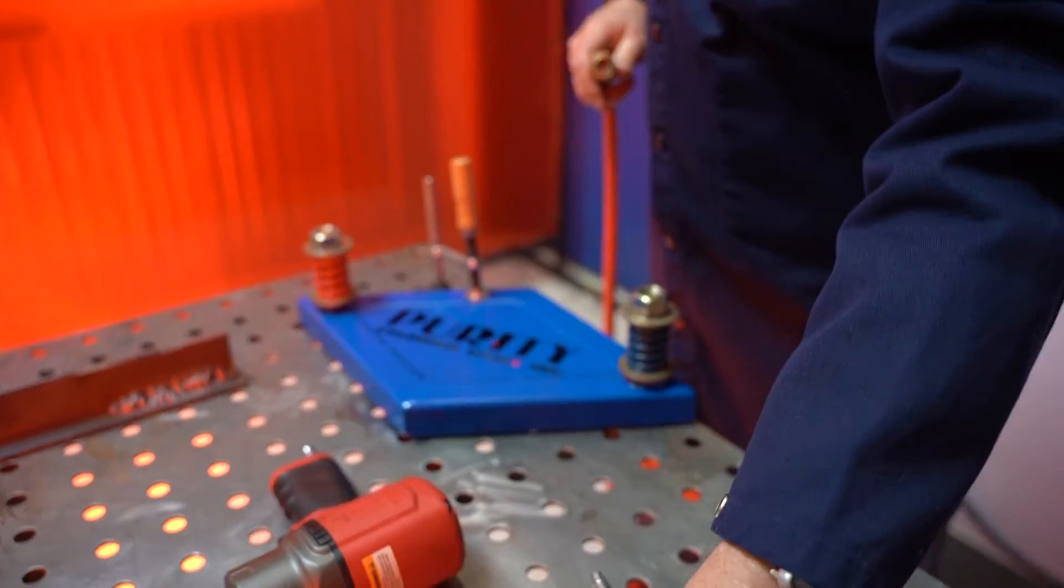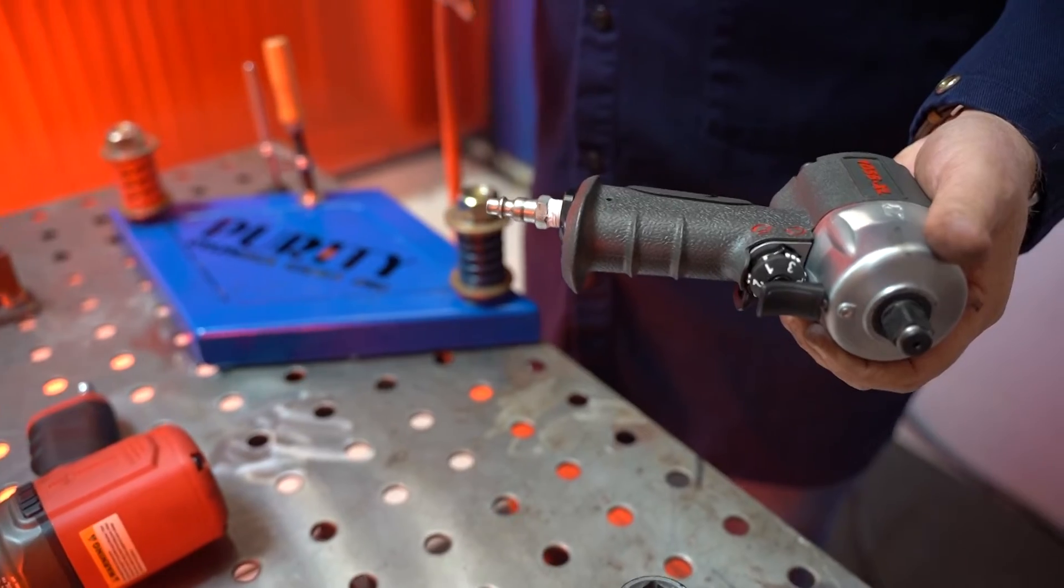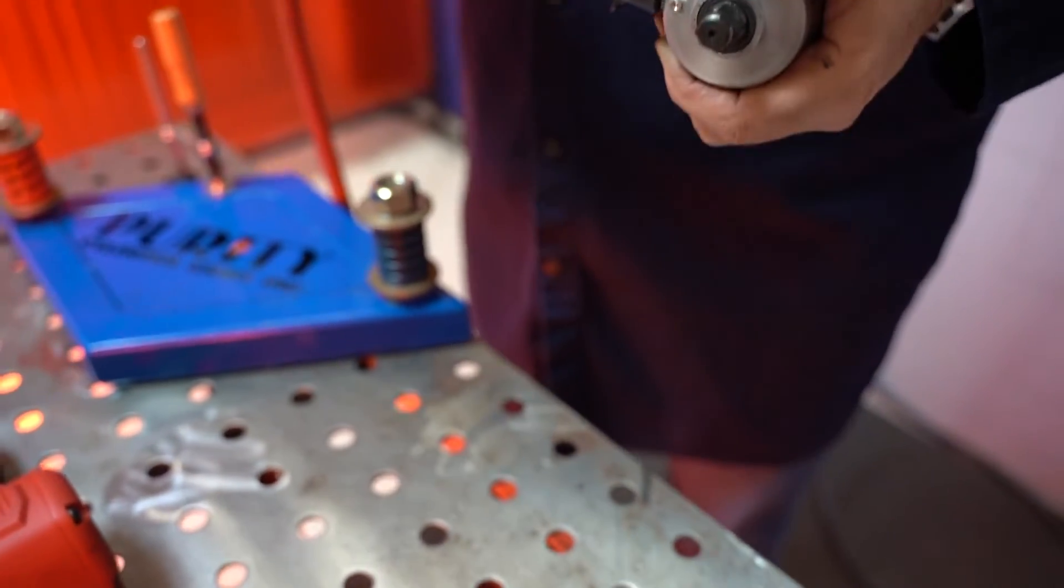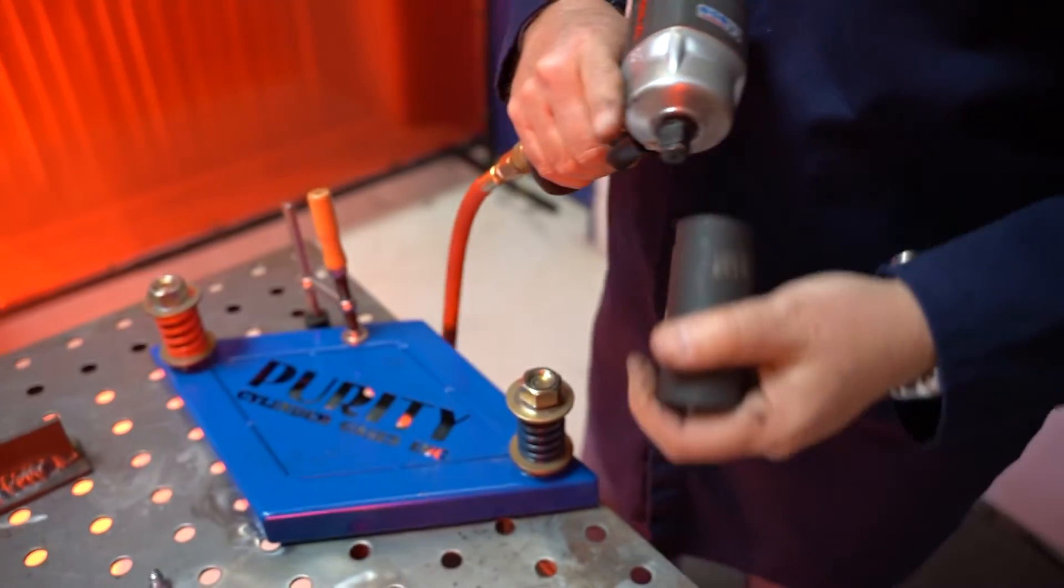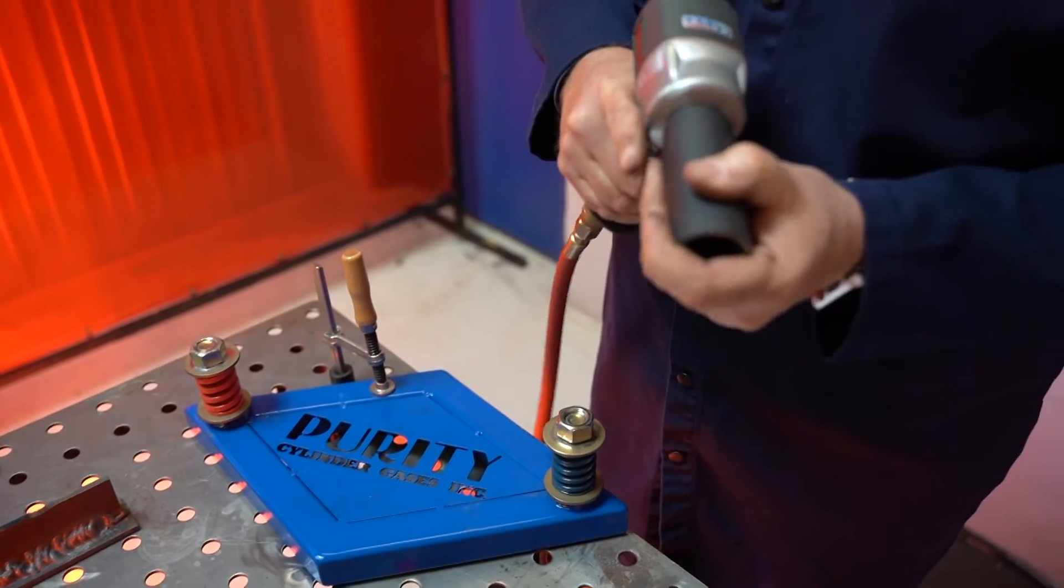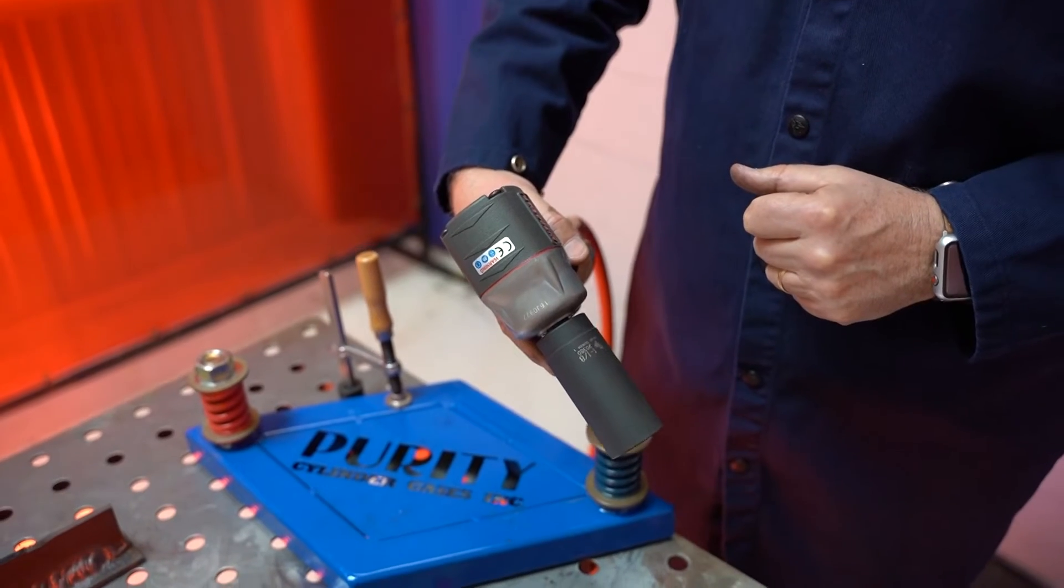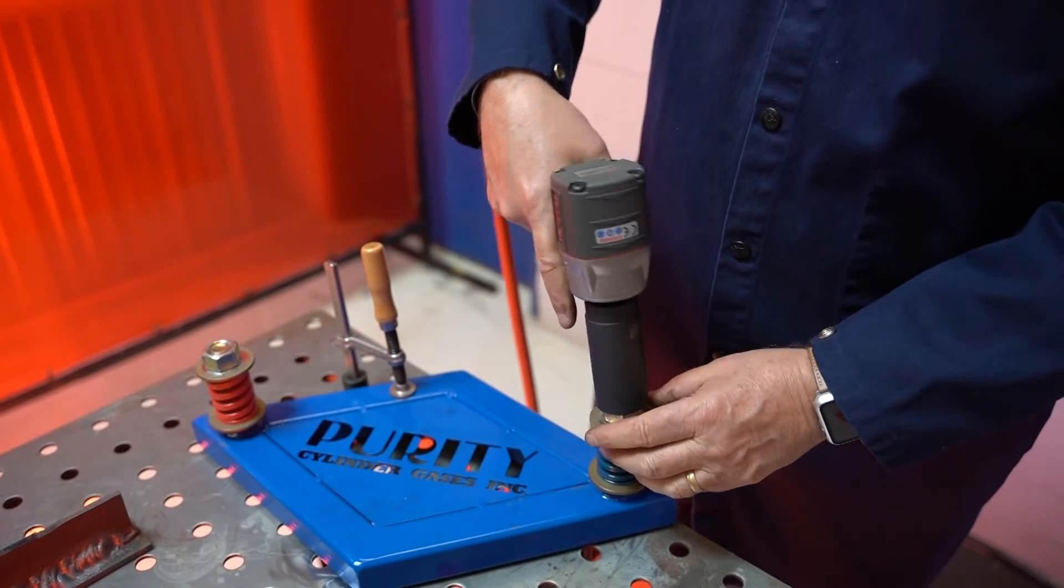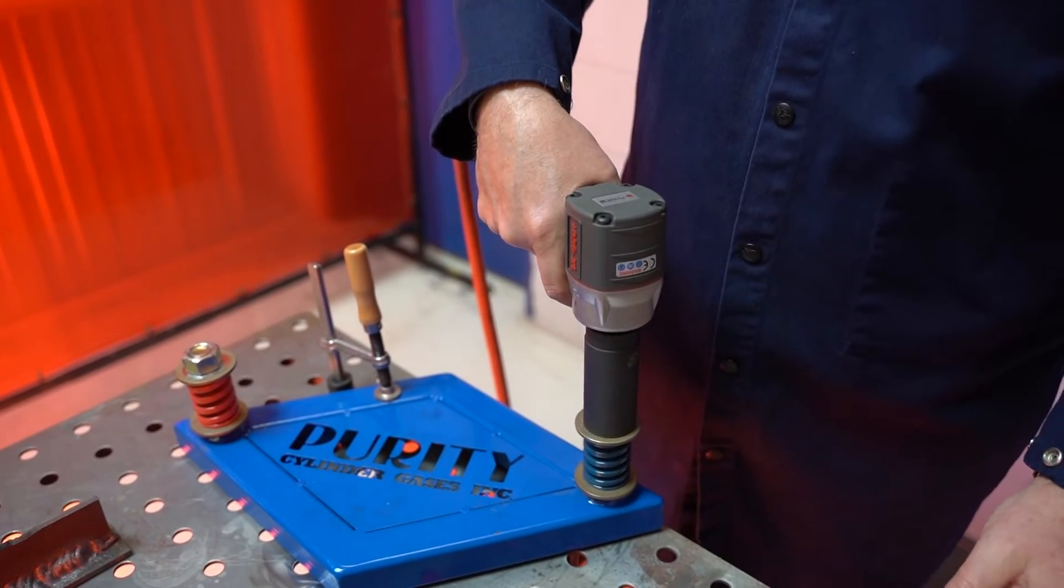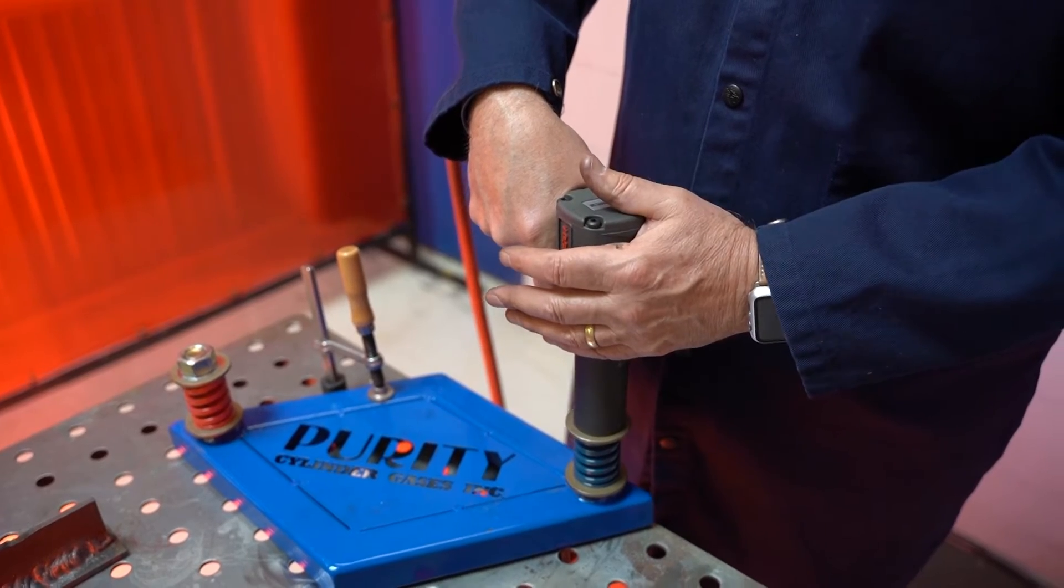Let's look at the Mini. Same situation with the retainer and the socket. I'll go ahead and connect it. Go ahead and put the socket on. You can see the difference. This is a great tool for tight quarter work. It's not going to be as loud, but it also doesn't carry as much power. 500 foot-pounds in forward or reverse.